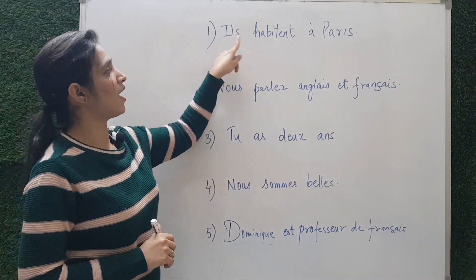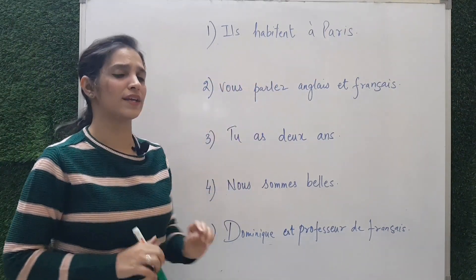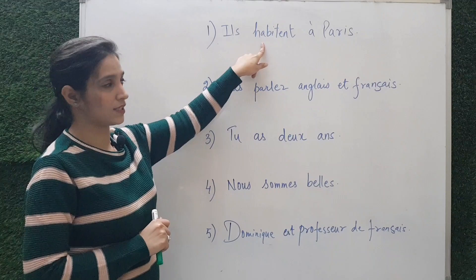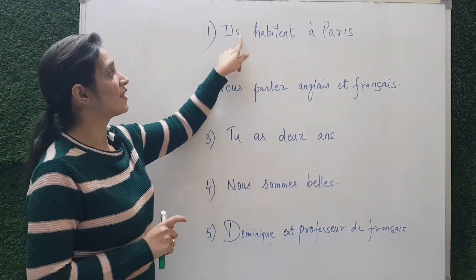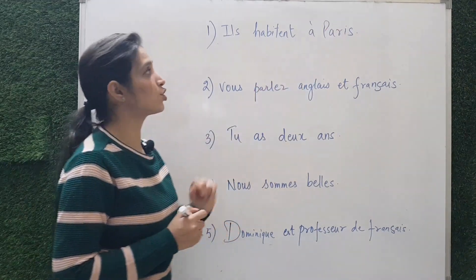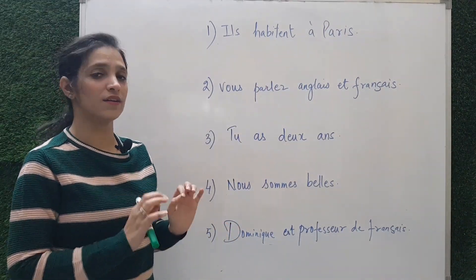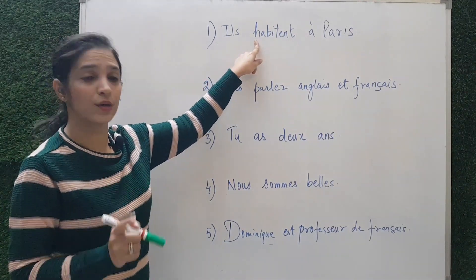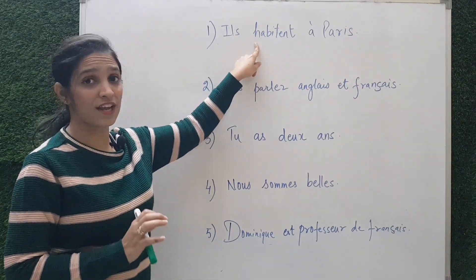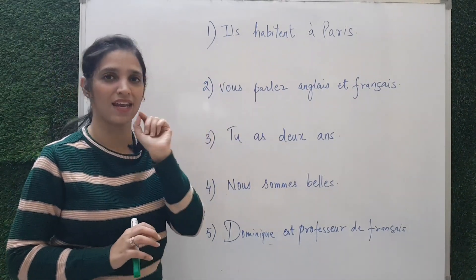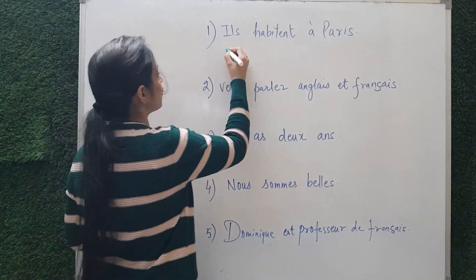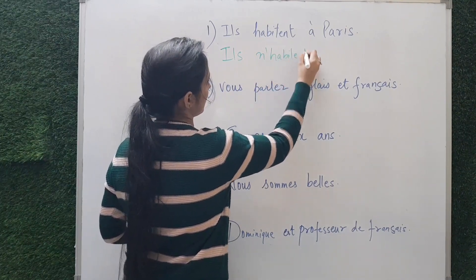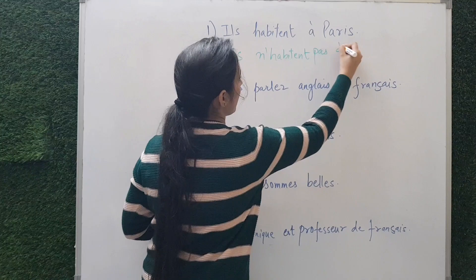The first sentence is 'Il habite à Paris,' meaning 'He lives in Paris.' Step one: find the verb — it is 'habite,' which means to live. Since 'h' in French is a vowel, we put 'n apostrophe.' The negative form is 'Il n'habite pas à Paris.'